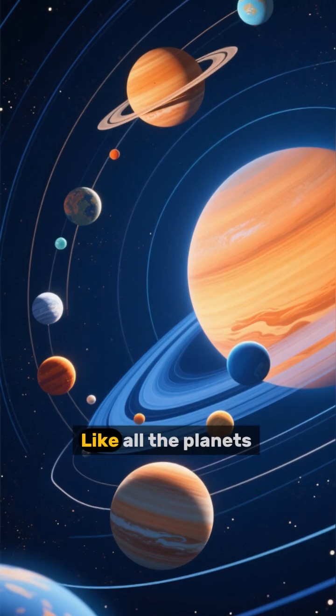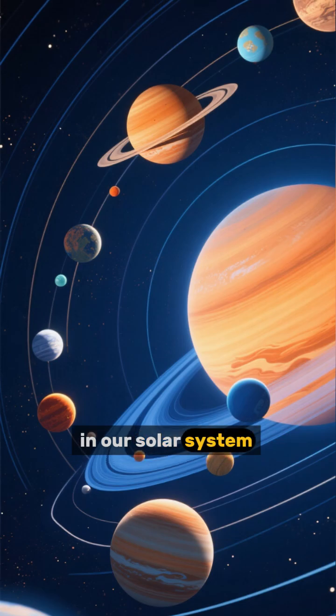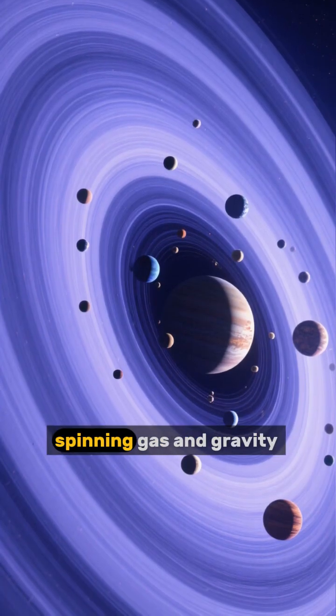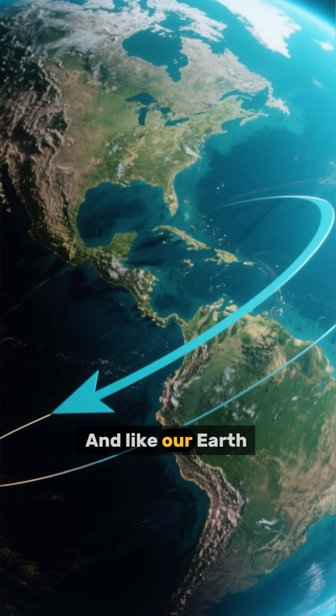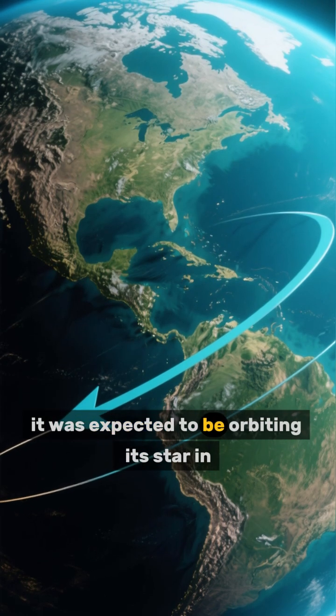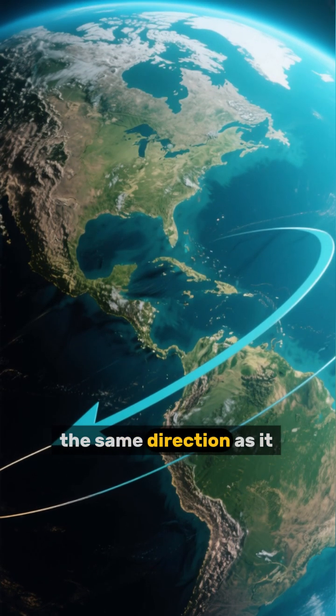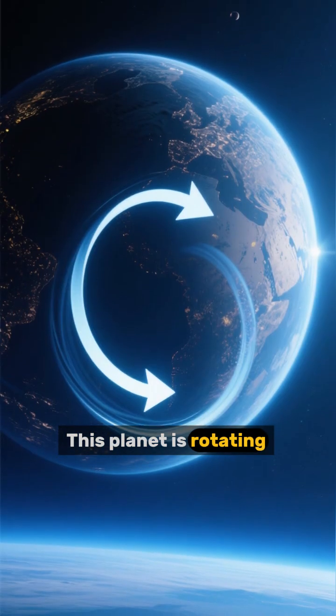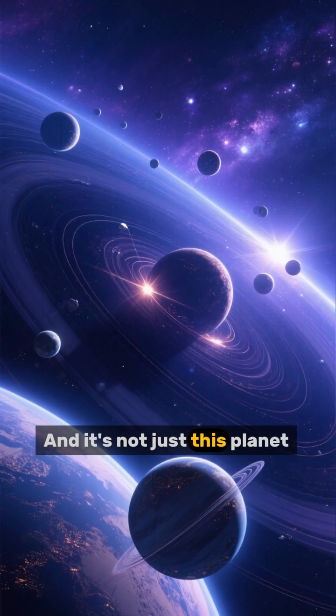Like all the planets in our solar system, this exoplanet was thought to have formed from a disk of spinning gas and gravity. Like our Earth, it was expected to be orbiting its star in the same direction as it rotates. But nope, this planet is rotating the opposite way, and it's not just this planet.